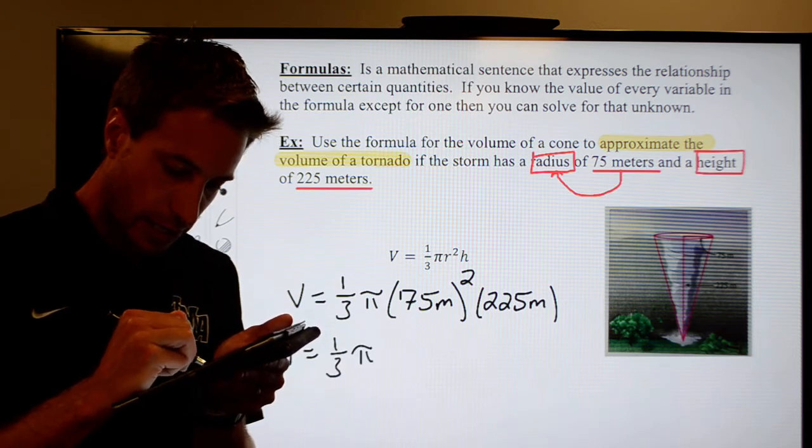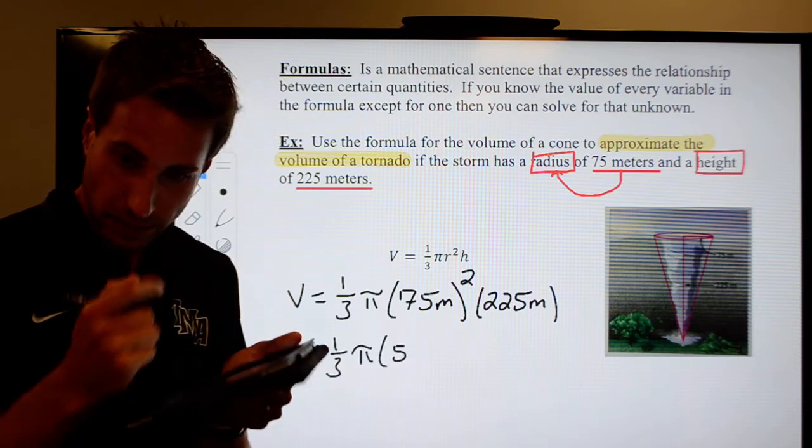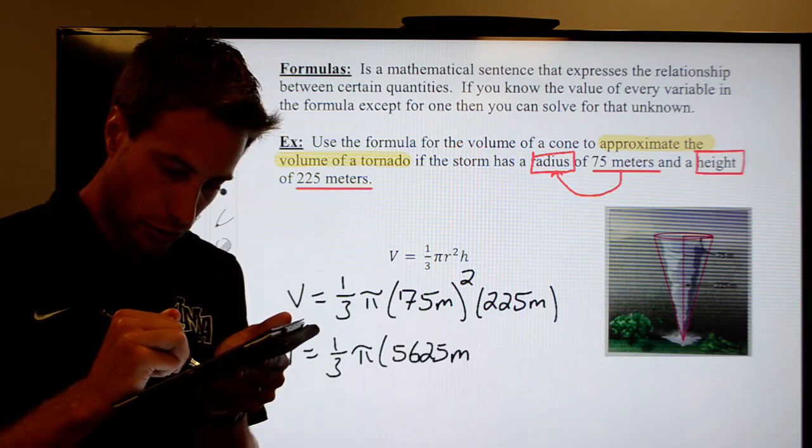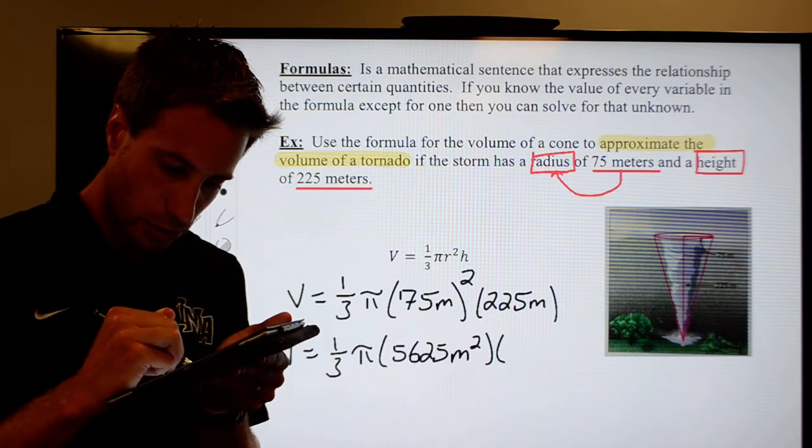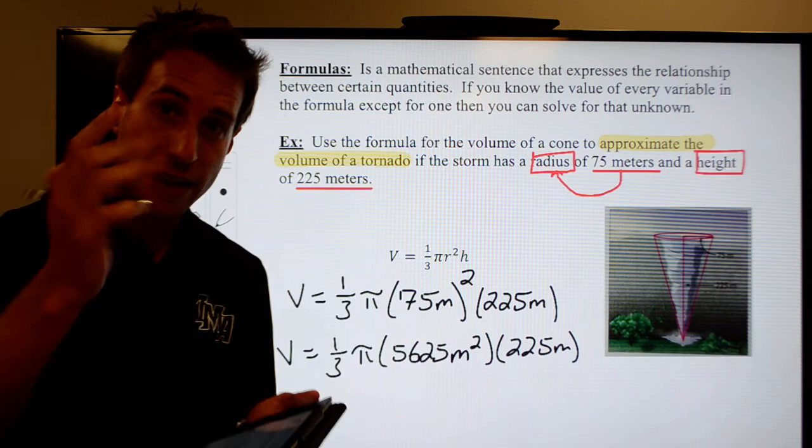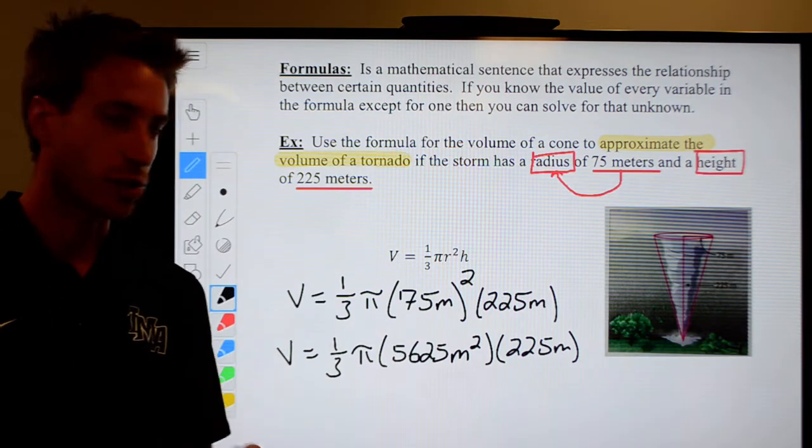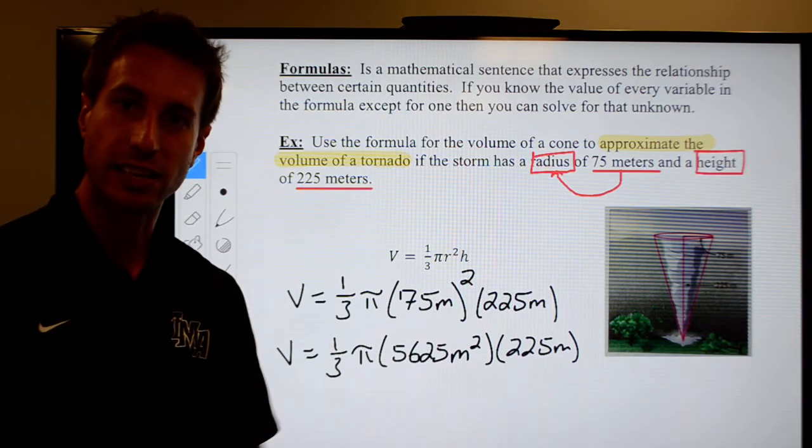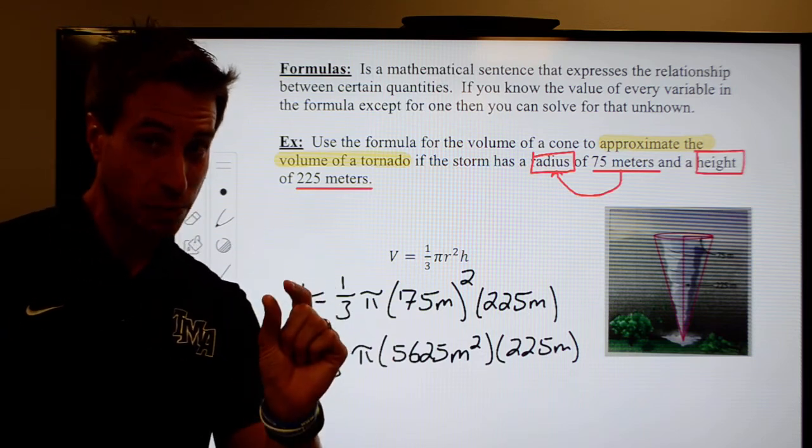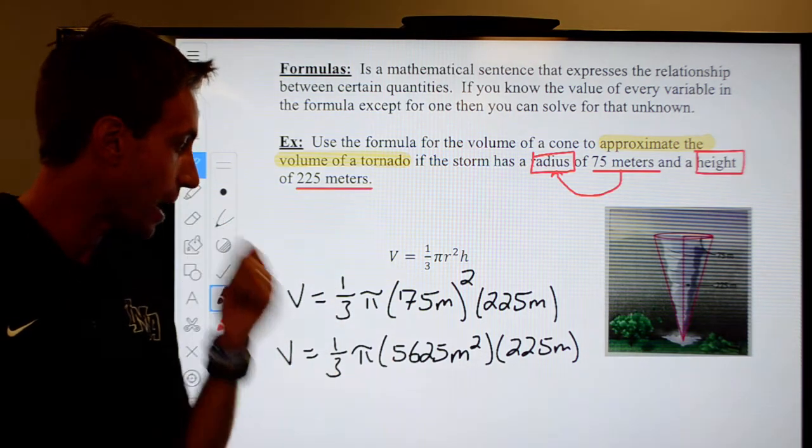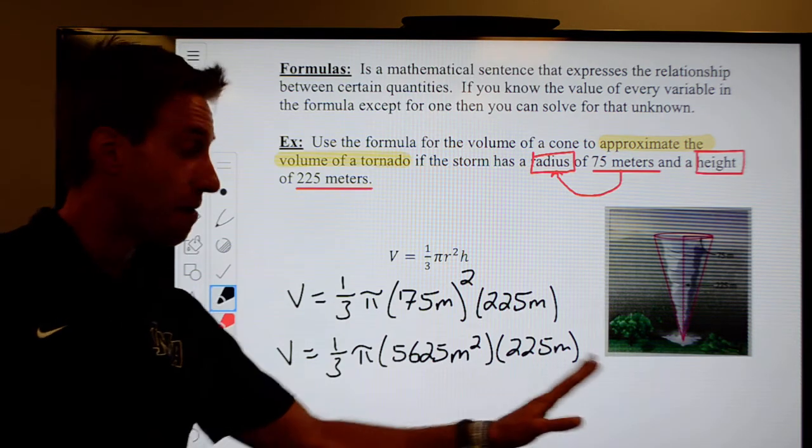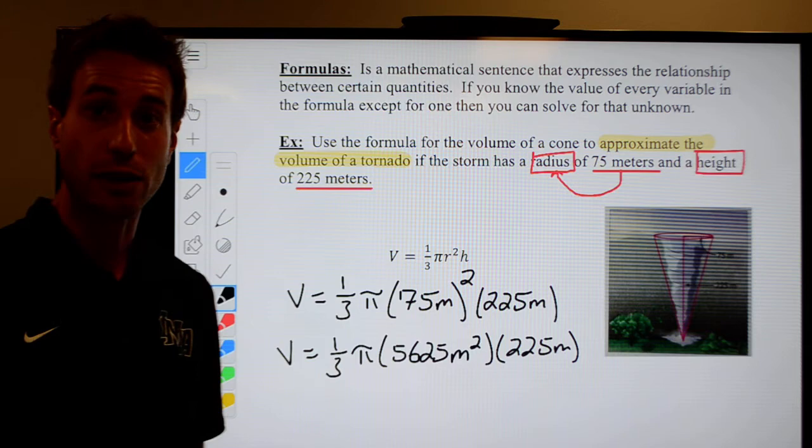So again, we said it was 5,625 meters squared times 225 meters. Now the next part of the order of operations is to go ahead and do multiplication and division from left to right. I'm going to cheat a little bit here. I think you'll be okay with it. I'm actually going to multiply these guys together first. Then I'm going to come back and take care of the one third. I hope that doesn't throw you off too much.